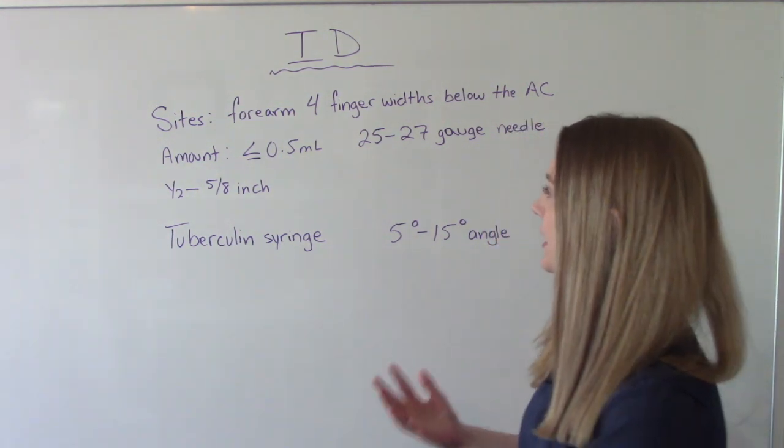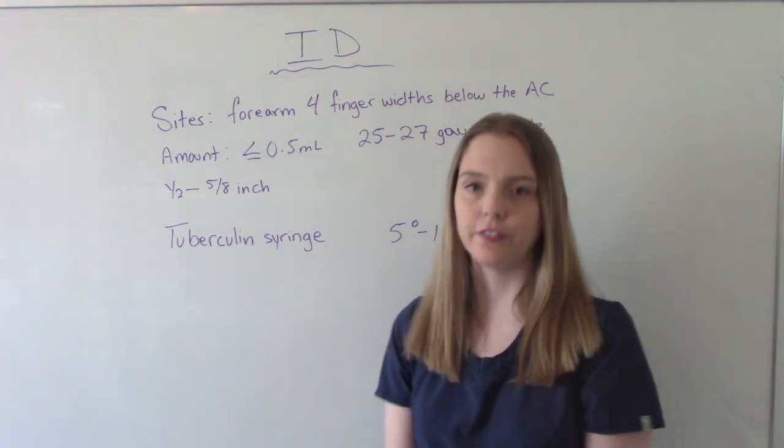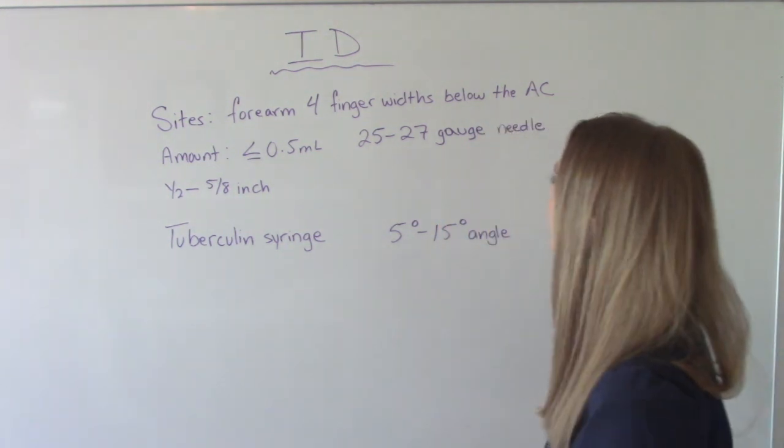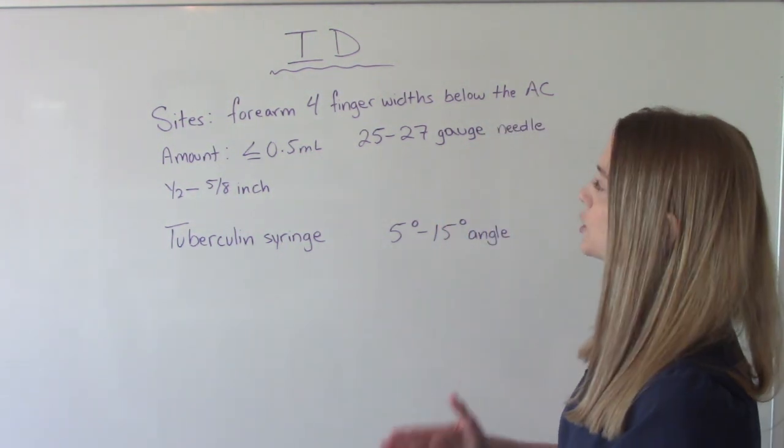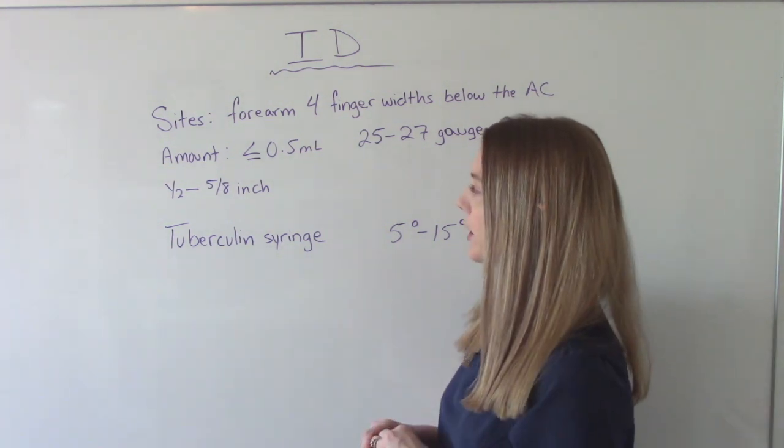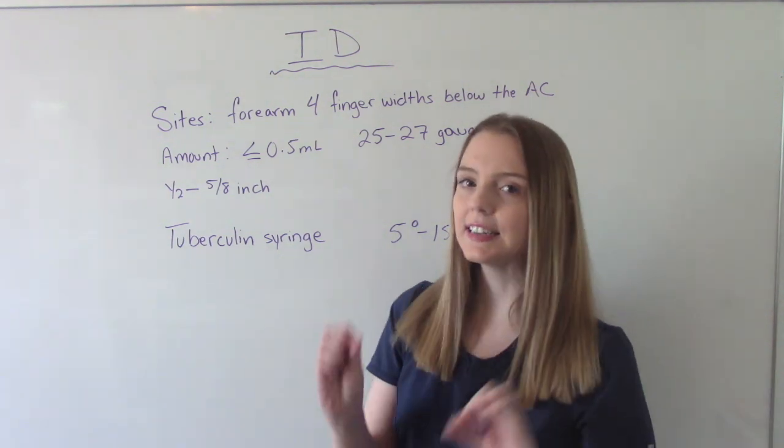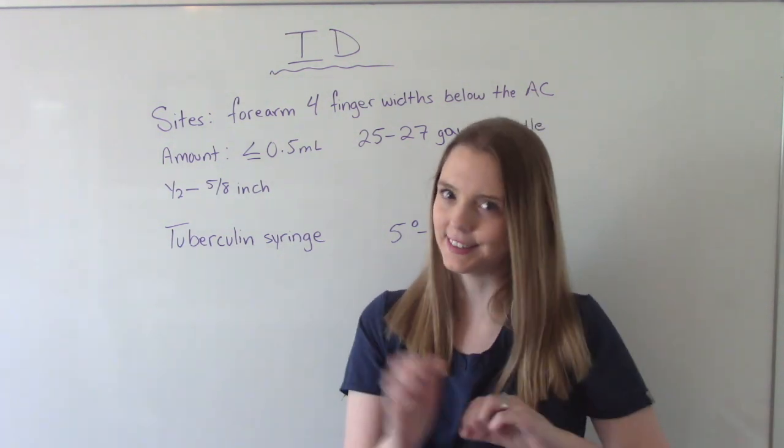The amount we give is less than or equal to 0.5 mL, so a very small amount. The typical needle gauge is 25 to 27, and the length of the needle could be from anywhere to half an inch to five eighths inch long. So these are little amounts we're giving and these are little needles we're using.